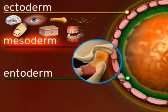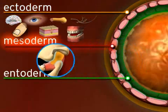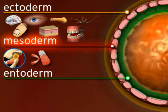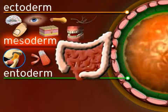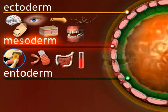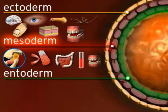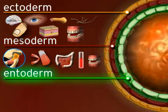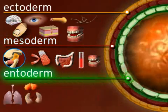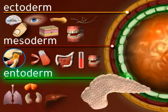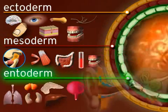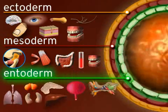The mesoderm goes on to form the bones, skin, muscles, urinary tract, digestive system, blood and blood vessels, and teeth too. The entoderm forms the lungs, the tonsils, thyroid gland, liver, pancreas, parts of the bladder, and the inner ear.